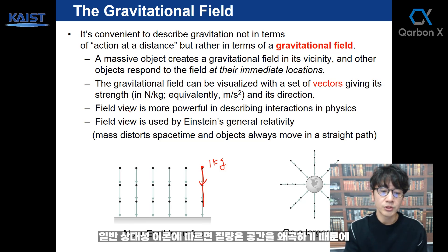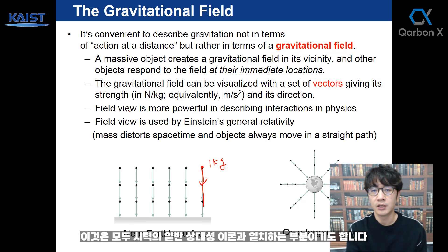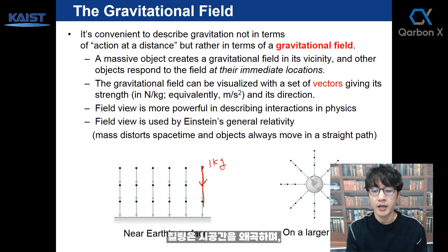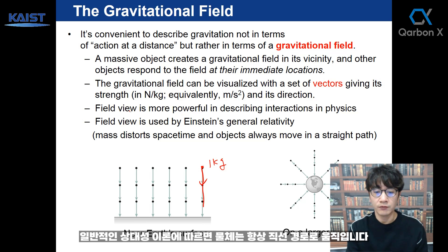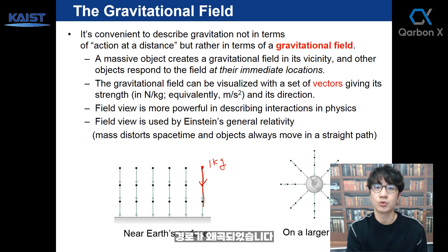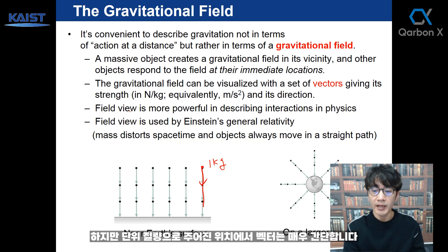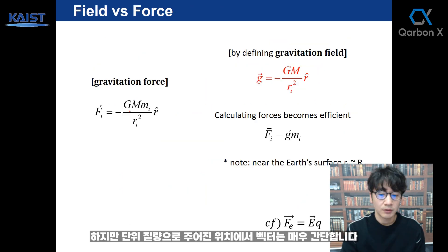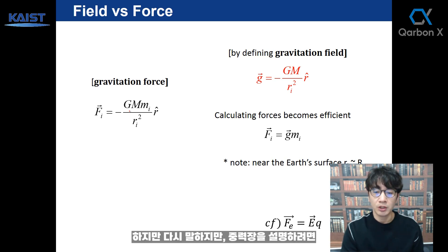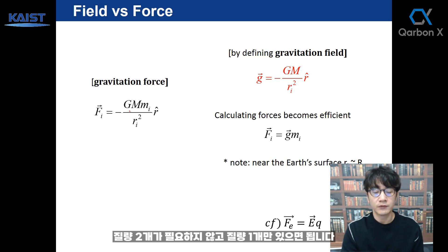More advanced physics is described by fields rather than forces. The field view is also consistent with Einstein's general relativity. According to general relativity, mass distorts space-time, and objects always move in a straight path — it is the path that is distorted. This is a different concept from Newtonian space-time, where space is uniform and force generates acceleration and curved motion. The gravitational field is simply the vector magnitude of force per unit mass at a given position, and it requires only one mass to describe it.